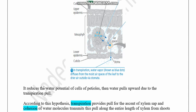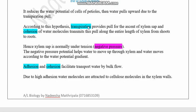The reduced water potential in petiole cells pulls water in the xylem upward. This is known as transpiration pull — transpiration provides a pull for the upward movement of xylem sap. The cohesion between water molecules transmits this transpiration pull along the entire length of the xylem from shoot to root.